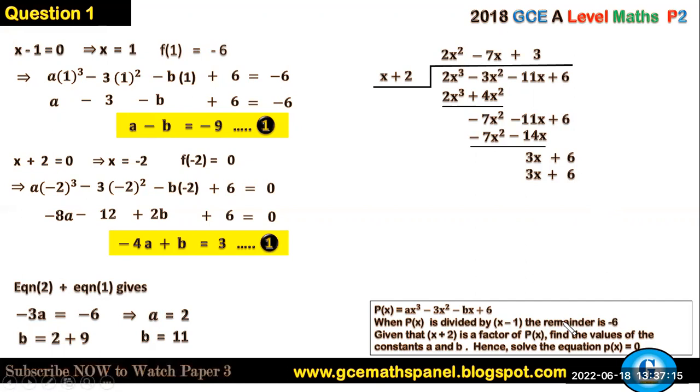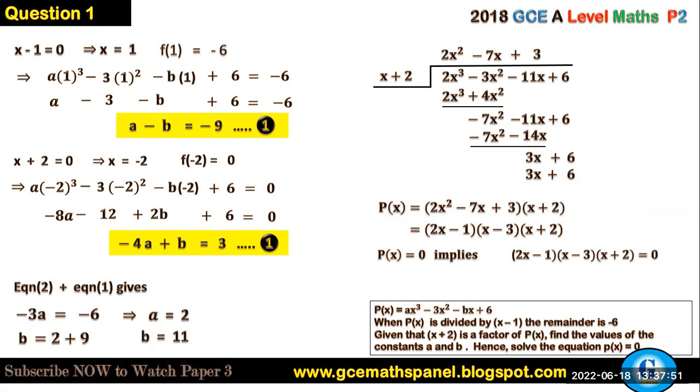This confirms what was set in the equation, that (x + 2) is a factor. From here we can express P(x) as divisor times quotient: (x + 2)(2x² - 7x + 3). Now in this bracket we have a quadratic which we can factorize further to have (2x - 1)(x - 3). Here P(x) has been expressed as a product of three linear factors. Solving the equation P(x) = 0 implies either the first factor equals 0, or the second equals 0, or the third equals 0, giving us x = 1/2, or x = 3, or x = -2.